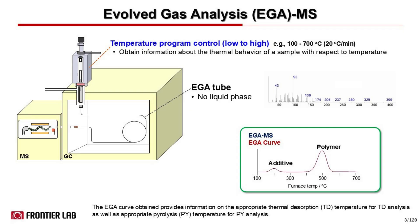The typical data obtained is something similar to differential thermal analysis or TGA, and shows peak top temperature for volatiles and polymer compounds. The peak response is due to mass abundance, and the average mass spectra of the peak can be used to interpret the chemistry of the sample we are analyzing.